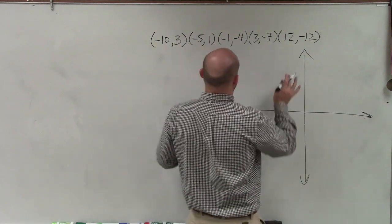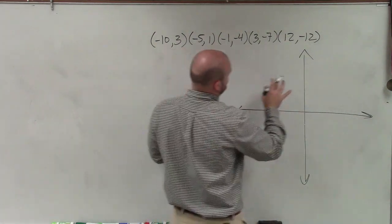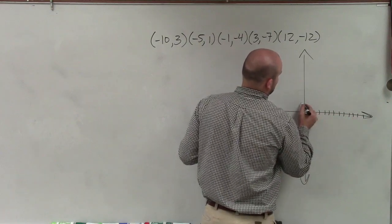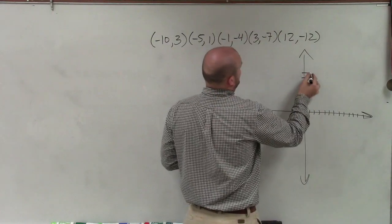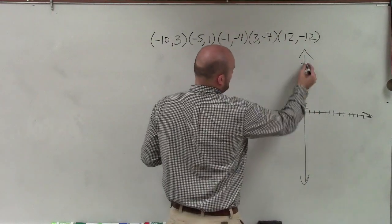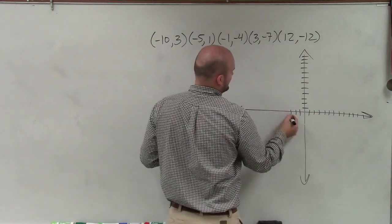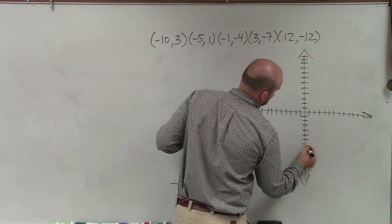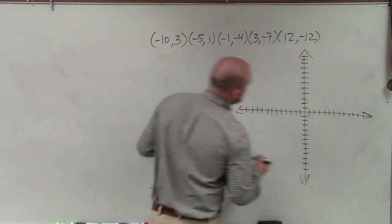I'm just going to plot my points. It looks like the maximum number I go through is 12. So I'll number the axes: 1, 2, 3, 4, 5, 6, 7, 8, 9, 10, 11, 12 on each axis, including the negative direction.